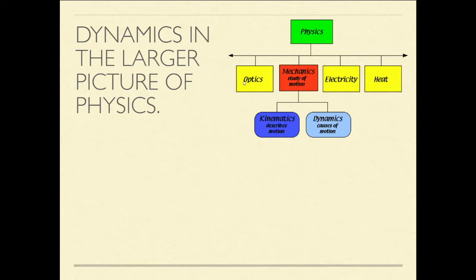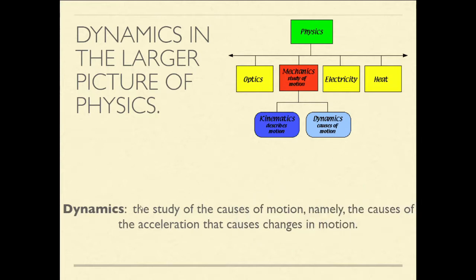Here's physics, and if you break it down, there's optics studies, mechanics, electricity, heat, sound, light, and many more. If you go under mechanics and break that down to its various categories, kinematics is what we've done so far in chapters two and three — studying just the characteristics and how to model motion. Dynamics is what we're doing now, studying the causes of motion and how it can be changed. Dynamics is the study of the causes of motion, namely the causes of the acceleration that causes changes in motion.